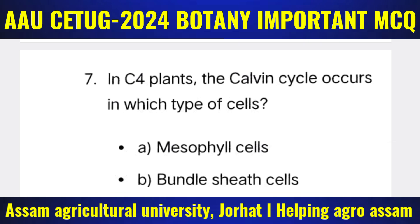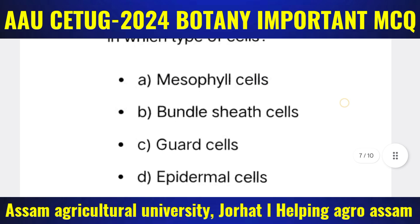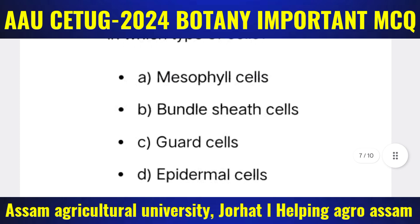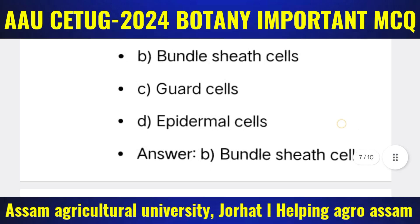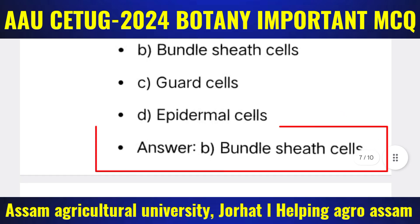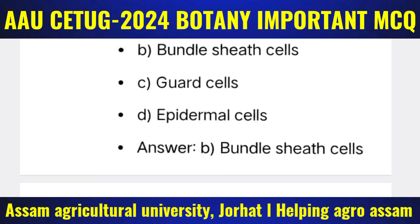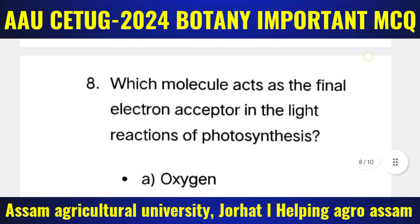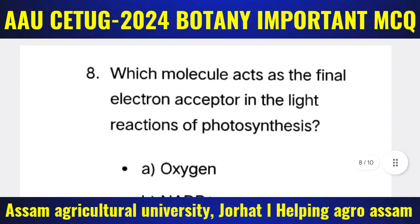Next question: In C4 plants, the Calvin cycle occurs in which type of cells? The options are: (a) Mesophyll cells, (b) Bundle sheath cells, (c) Guard cells, (d) Epidermal cells. The correct answer is option B — Bundle sheath cells.